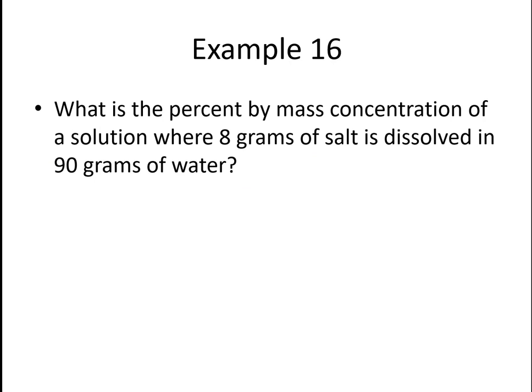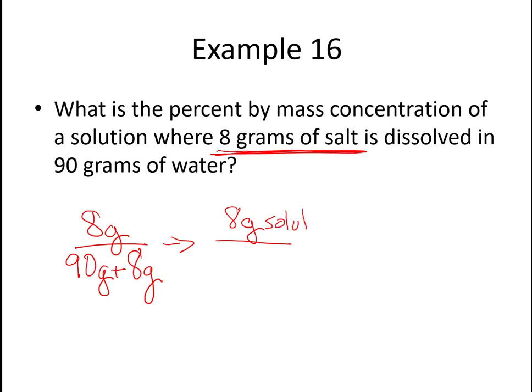So I'm going to work this out with you. What is the percent by mass concentration of a solution where 8 grams of salt is dissolved in 90 grams of water? So my 8 grams of salt is my mass of my solute. So that's going to be 8 grams, 8 grams of salt. And it's dissolved in 90 grams of water. Now, I've got my 90 grams, but that's not the total mass of my solution. The total mass of my solution is 90 grams of water plus the 8 grams of salt. So that means effectively what I'm doing is 8 grams of solute divided by 98 grams of solution, and then I will multiply by 100 to get my percent by mass.